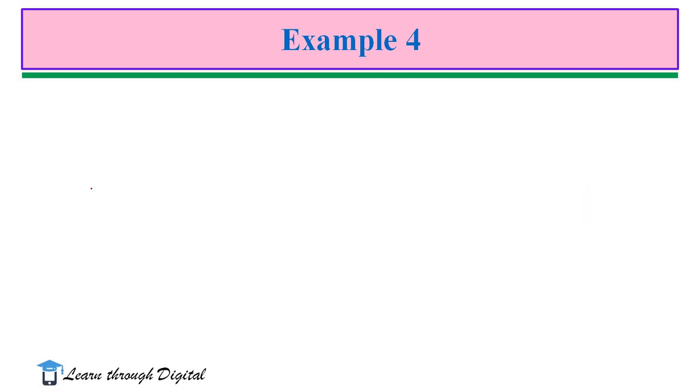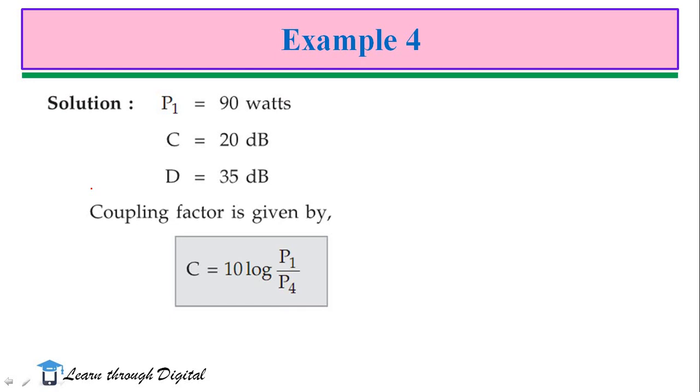So, we find P2, P3 and P4. First, we write P1 90W. C is given 20dB. D is also given 35dB.